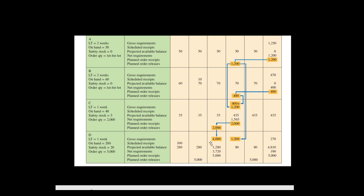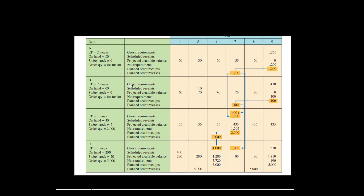These planned order releases are your final answers. Usually this MRP table format will be provided in most exams to give clarity on the sequence of rows. But you need to understand the logic of arriving at these various calculations. Thank you.